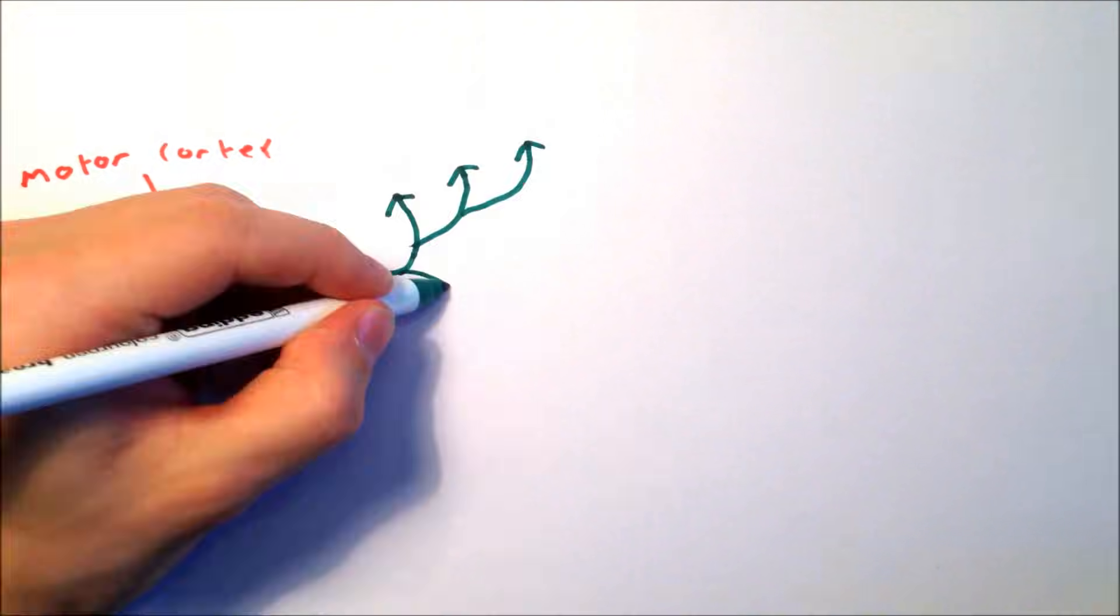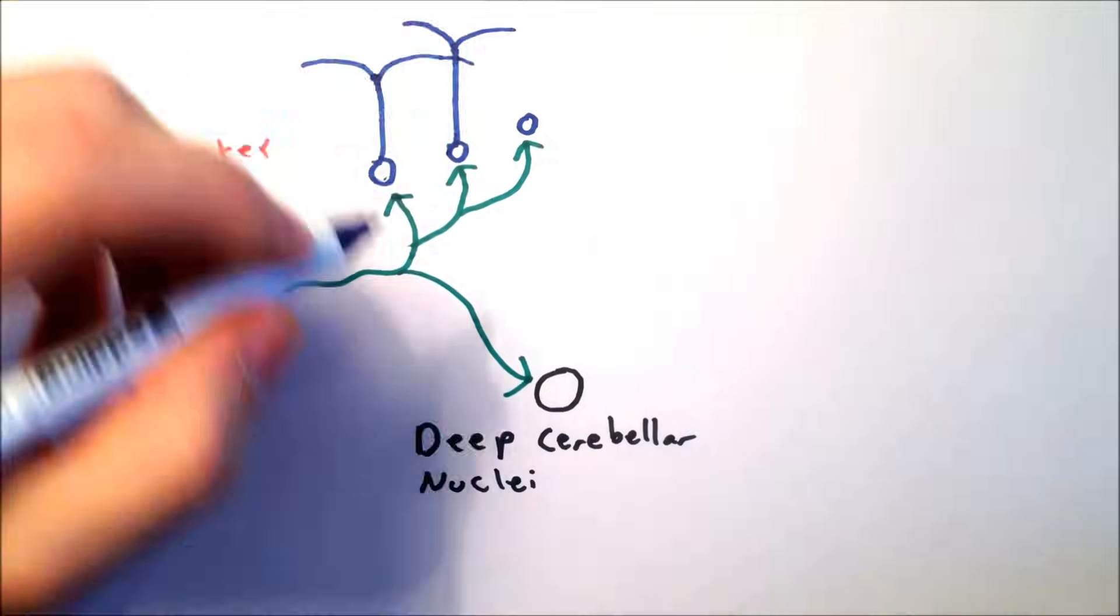The cerebellum receives input from two main sources. Mossy fibers arise from a variety of brain areas, including the motor cortex and the spinal cord, and synapse onto the cerebellar cortex and deep cerebellar nuclei.